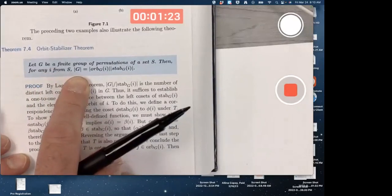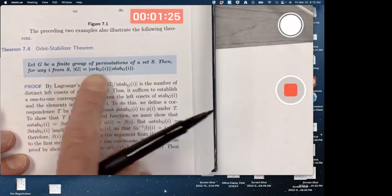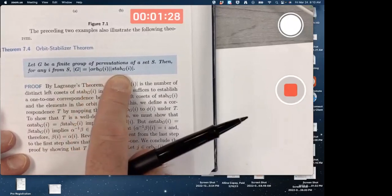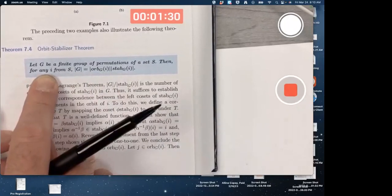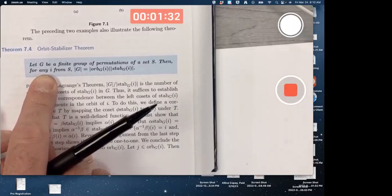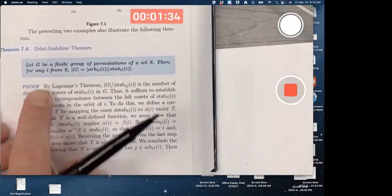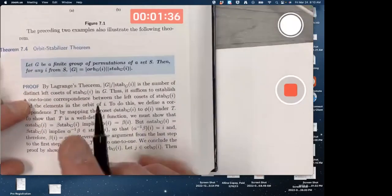The conclusion is that the order of G is the product of the orders of the orbit with the order of the stabilizer. For any I in S, I could be any element of S. So how do you prove this? Let's go ahead and study the proof in the book here.